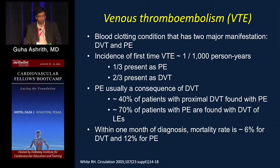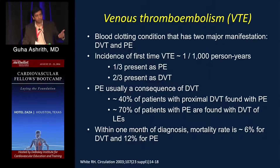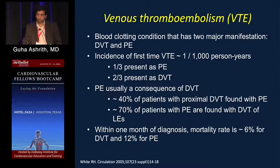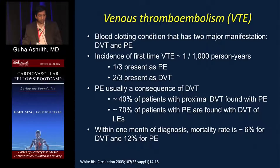Venous thromboembolism is a blood clotting condition with two major manifestations: DVT and PE. Most present as DVT, though many patients with PE have had a DVT without symptomatic presentation. About 40% of patients with PE have had a proximate DVT, and 70% of patients with PE are found to have a DVT of the lower extremities.